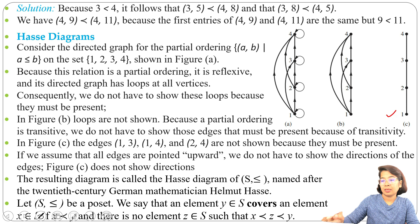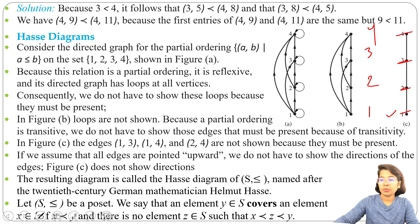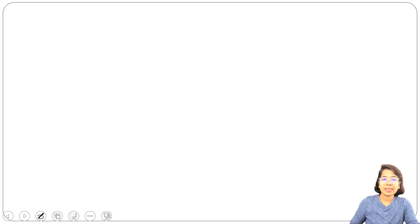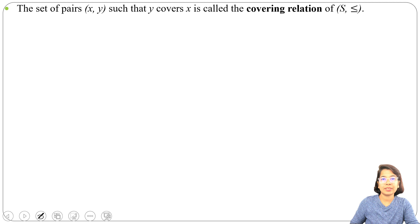For example: 2 covers 1, 3 covers 2, 4 covers 3 — so we draw 1, 2, 3, 4 in a chain. Now, 1 < 2 and 1 < 3, but since 2 < 3 we draw an edge from 2 to 3, not 1 to 3. Since 3 already covers 2 and 2 already covers 1, and 4 covers 3, we get the covering relation: the set of pairs (x, y) such that y covers x, called the covering relation of S.